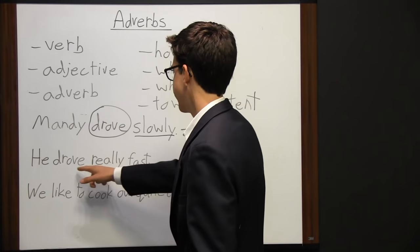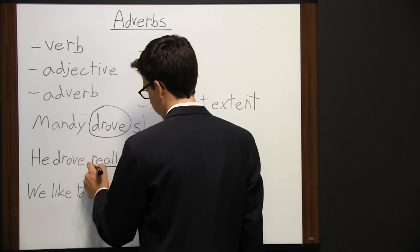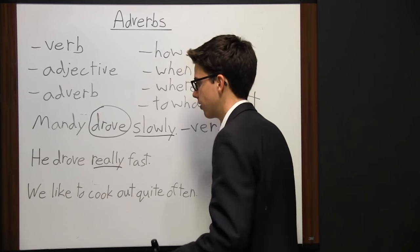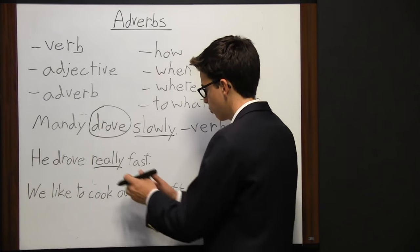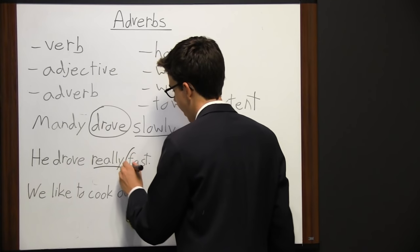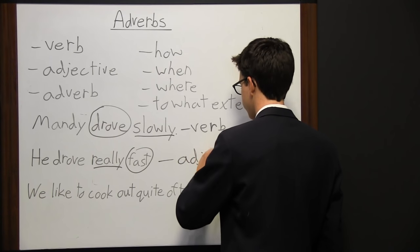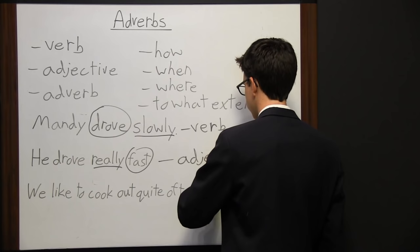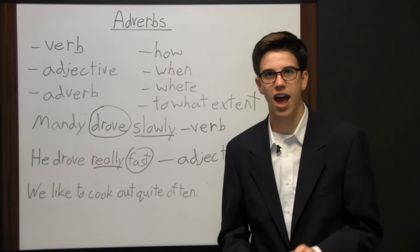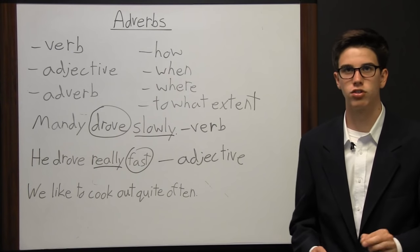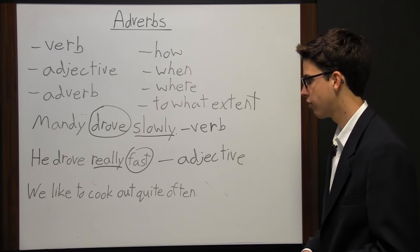In the sentence 'He drove really fast,' we find another '-ly' word. But 'really' isn't describing 'drove' — we're saying he drove really fast, so 'really' is describing 'fast.' In this case, 'fast' is an adjective, so the adverb 'really' describes the adjective 'fast,' telling the reader how quickly he drove.